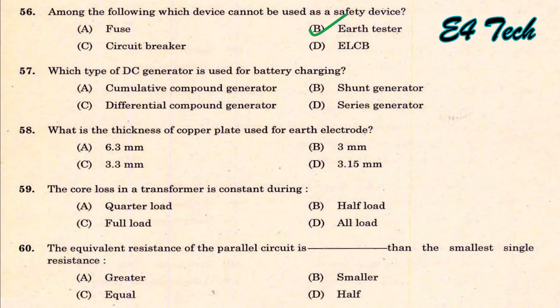Which type of DC generator is used for battery charging? Battery charging requires constant voltage. The DC generator used is a shunt generator. That is option B.